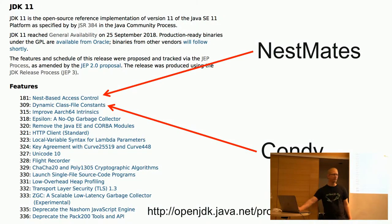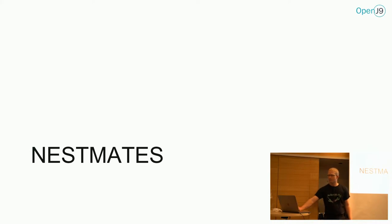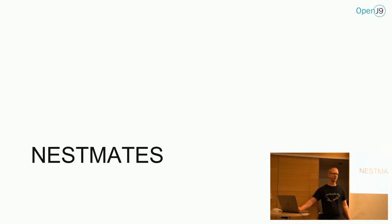If we take a look at JDK 11, there are two features in particular that really affect the JVM specification and the Java language specification: Nestmates and Condi, or Nest-based access control and dynamic constants. Let's start by taking a look at Nestmates. What I'm going to do is show you some example code — code that's worked for years and years — and what really changes here is how it gets compiled. Let's look at how it used to get compiled before we start to talk about what a Nest actually is.